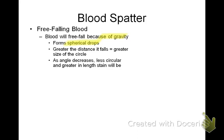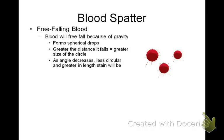The greater the distance it falls, the greater the size of the circle. As the angle of impact decreases away from 90 degrees, you're going to get a more elongated stain. This is what you would see with just a vertical fall at a 90 degree angle of impact.